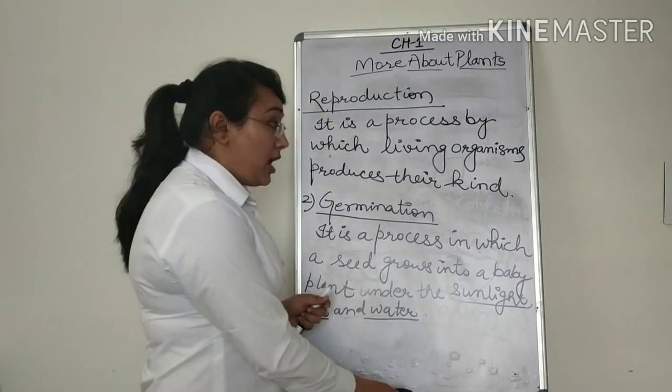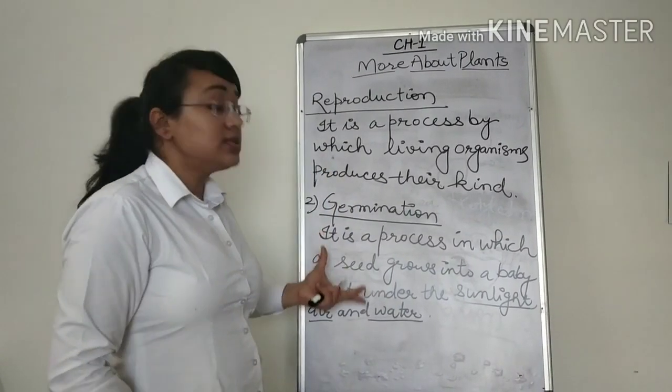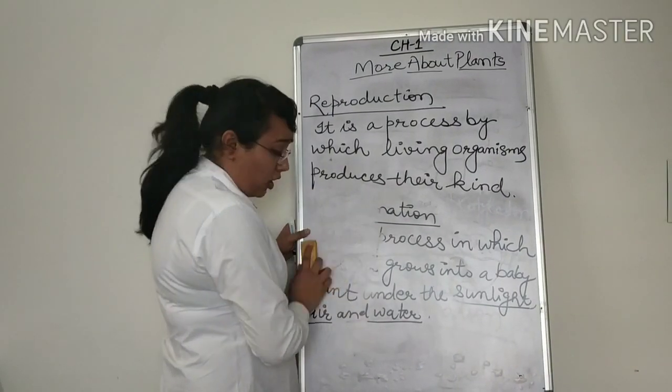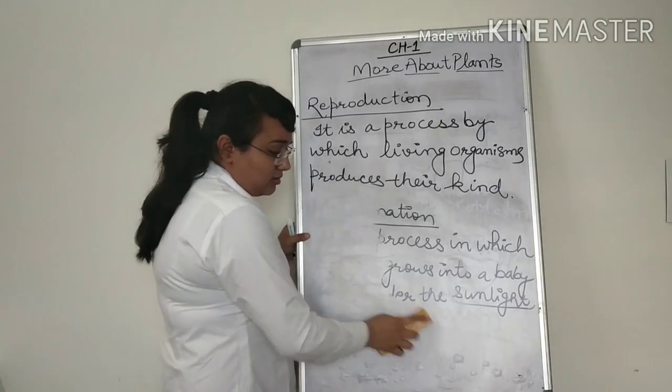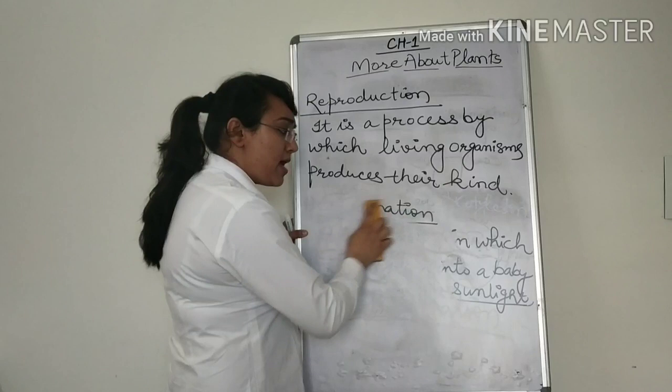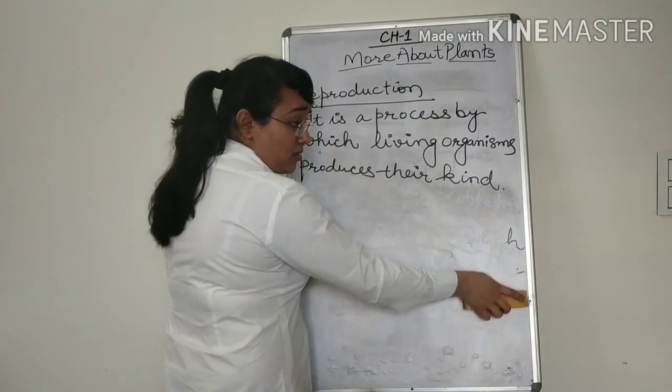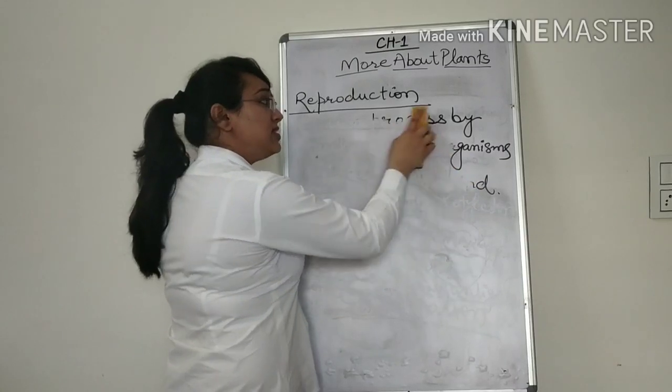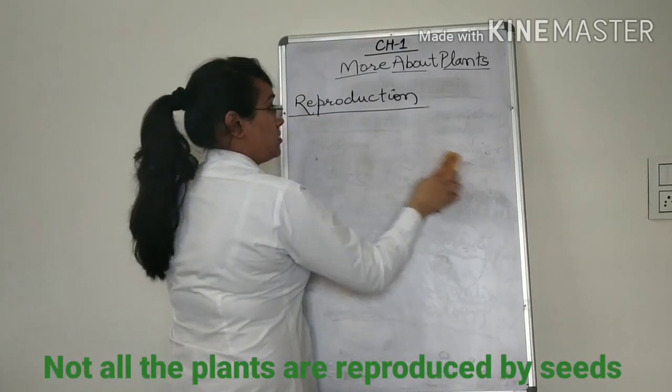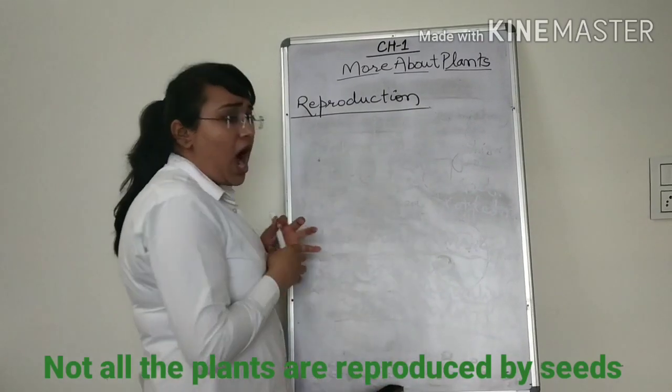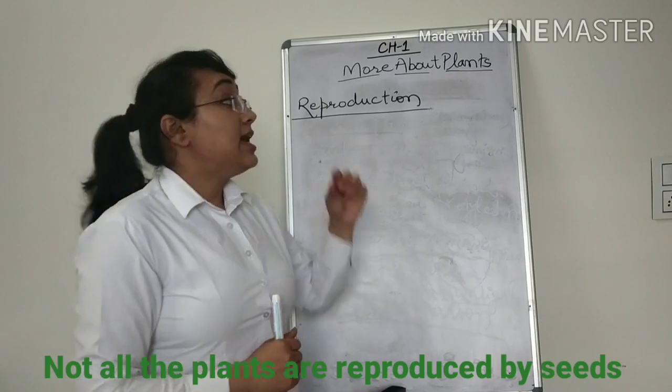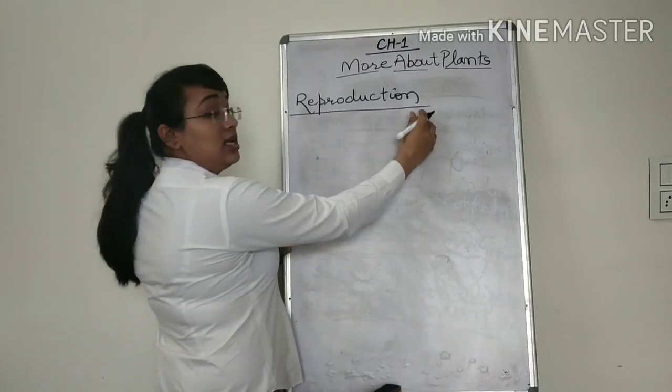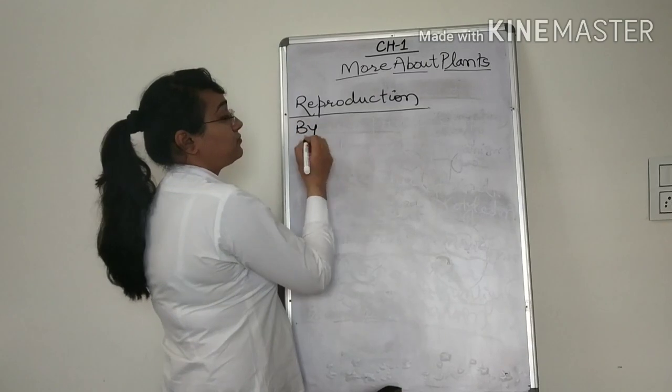So we have studied reproduction by using seed and how a seed germinates and a structure of a seed. Now have you ever thought that there are many vegetables, many fruits, those do not have seeds. Or tell me, do we have all the vegetables and fruits having seeds? No, absolutely not. So how do we reproduce then those plants? Not by the seeds, but by other parts of the plants. So secondly, we are going to study the reproduction by stem.